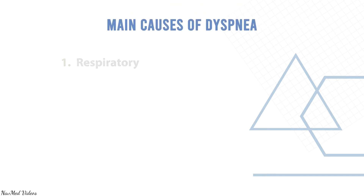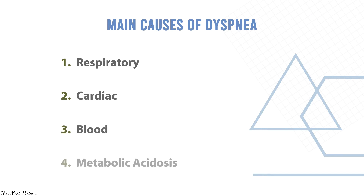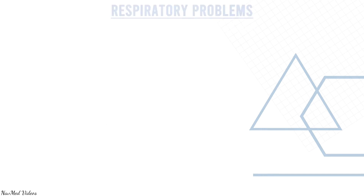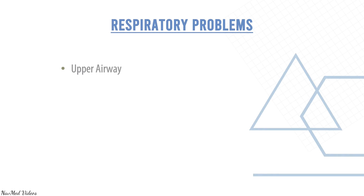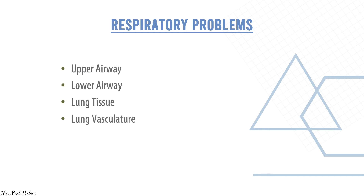The main causes of dyspnea are respiratory, cardiac, blood, and metabolic acidosis. Respiratory problems can be categorized as upper airway, lower airway, lung tissue, lung vasculature, and restriction of lung expansion.